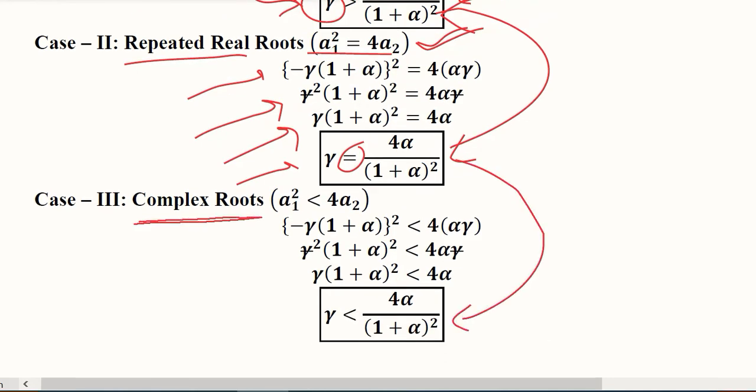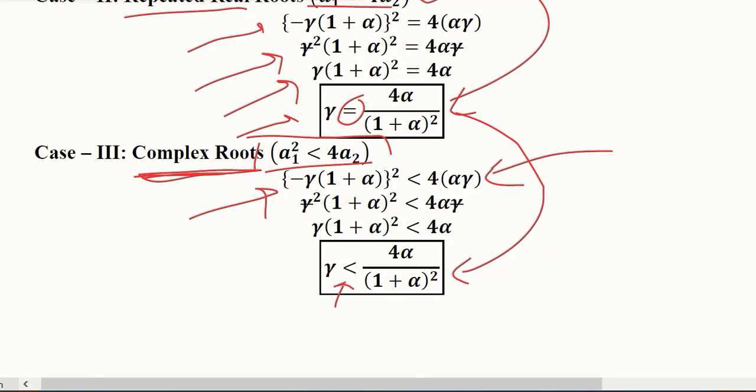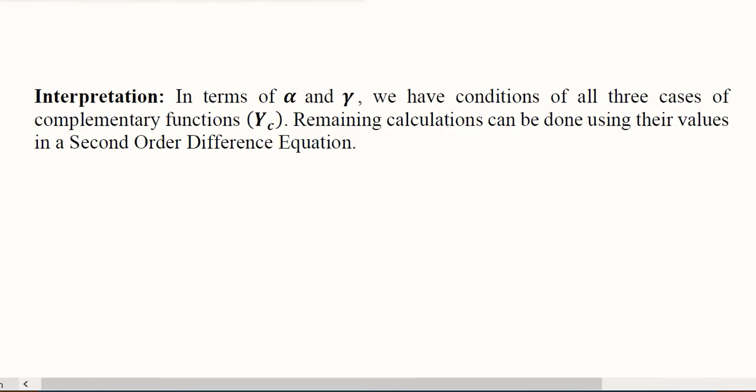In the next case, it is likely to be less than, because in the complex root case we know that the discriminant is negative. Learning from the previous two cases, we can say it will be less than case here because A1 square and 4A2 are remaining the same. Now we have all of these three cases.